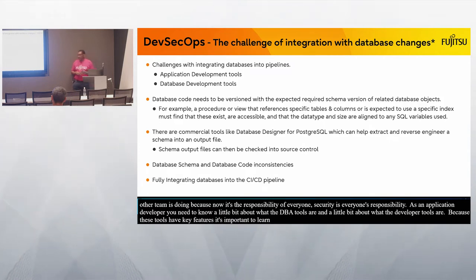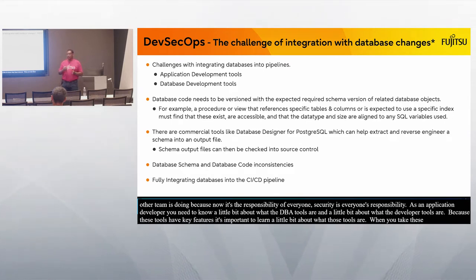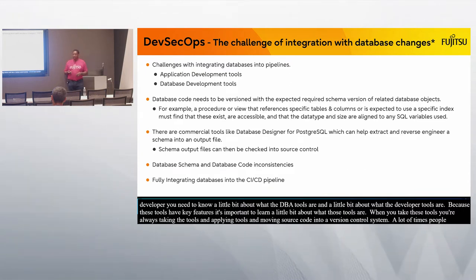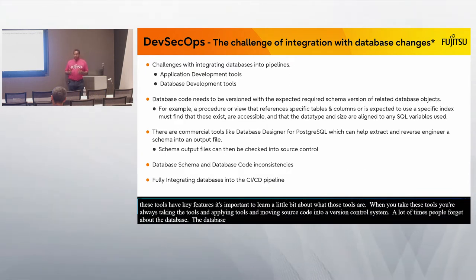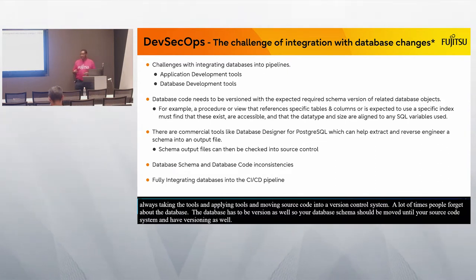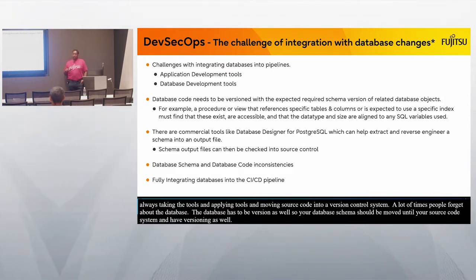As an application developer, you're always taking your tools, applying them, and moving your source code into a version control system. A lot of times people forget about the database — the database itself has to be versioned as well. Your database schema should also be moved into your source code system with versioning. If your application is on version 11.2.1, you should have a schema associated with that version in your pipeline as well.